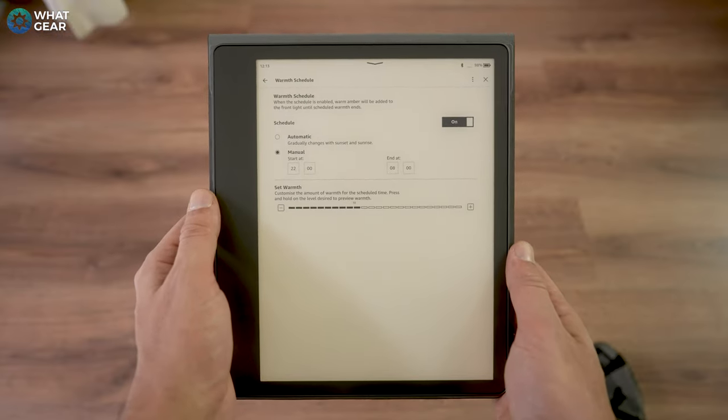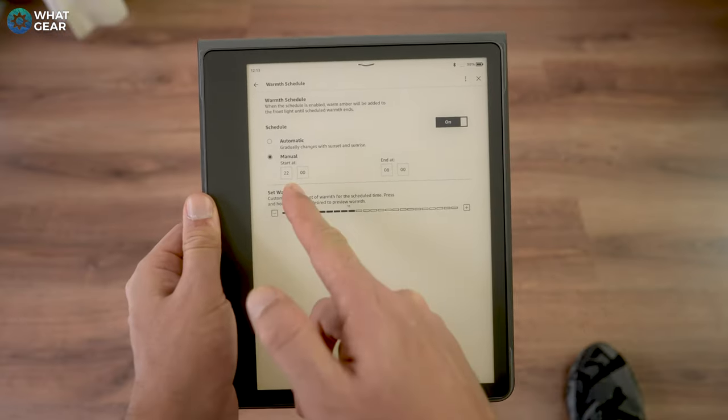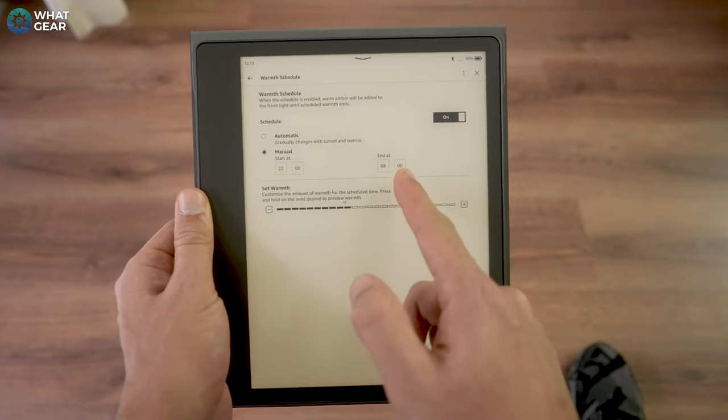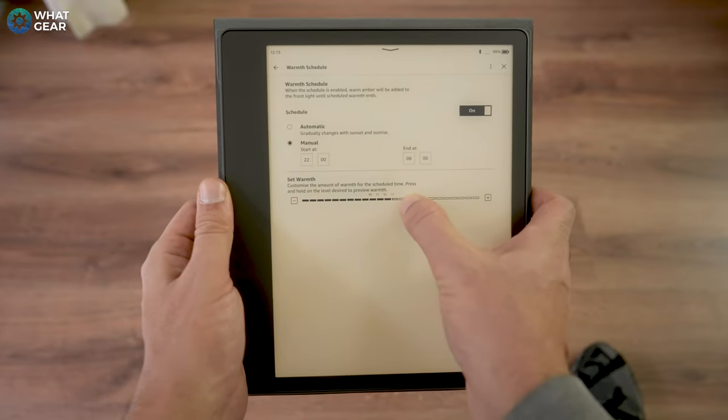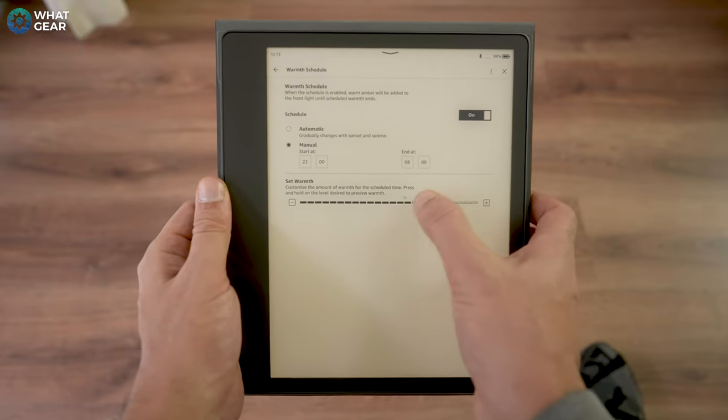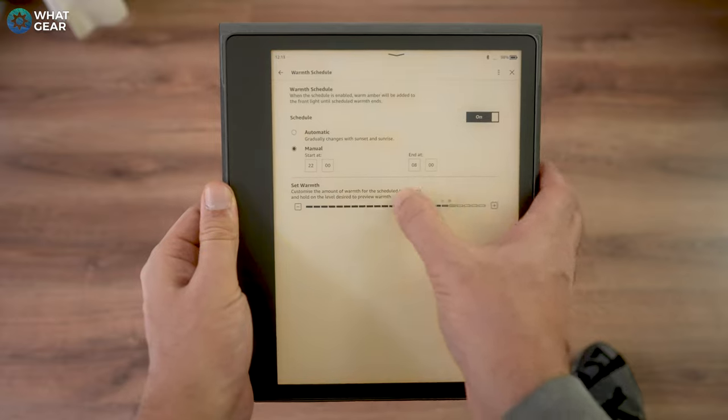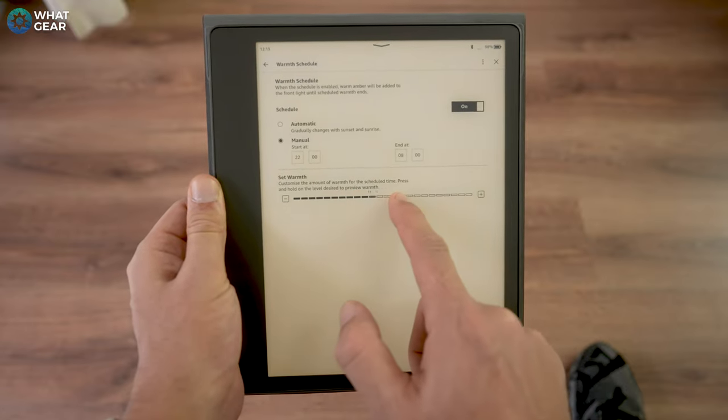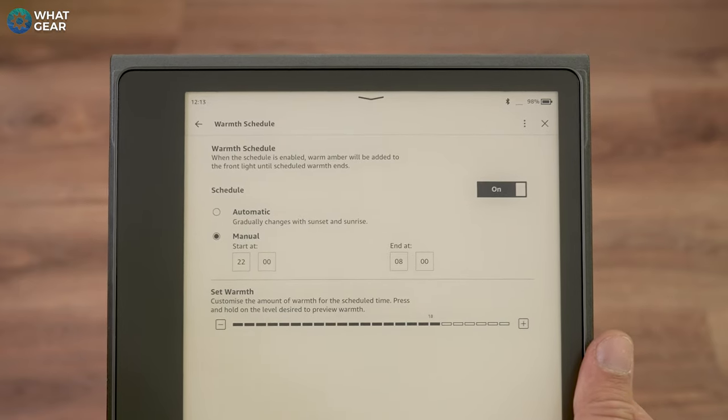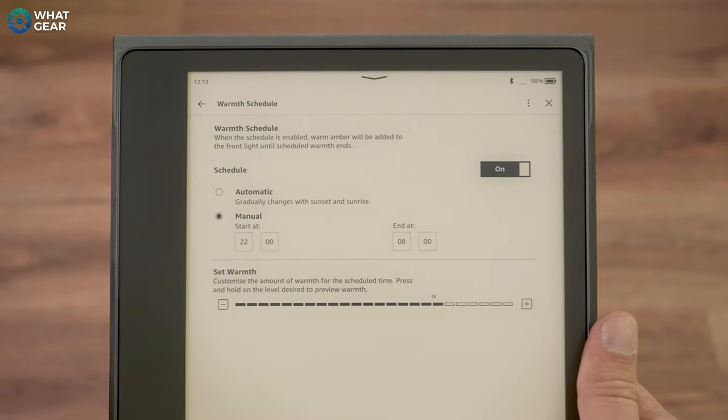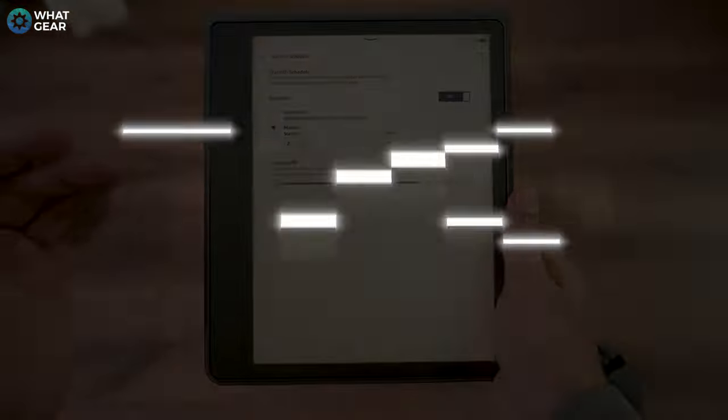Now what I recommend you do here is set this to a couple of hours before you go to bed each night and a couple of hours before you wake up each day and then you can set the custom warmth level that you want. Keep in mind it's better to have warmer tones towards the end of the day because those bluish tones can disrupt your sleep. Now you could leave this on automatic but I do believe the best thing to do is set it to manual because you know your sleeping pattern better than the tablet does.